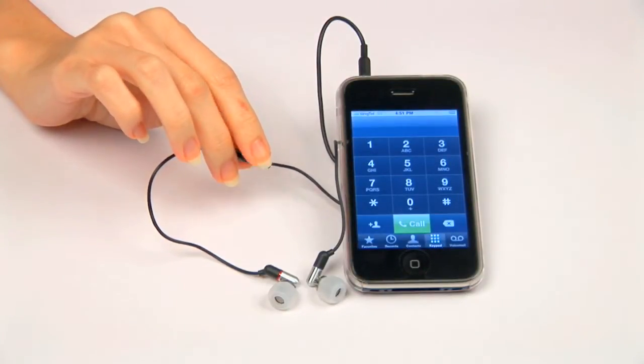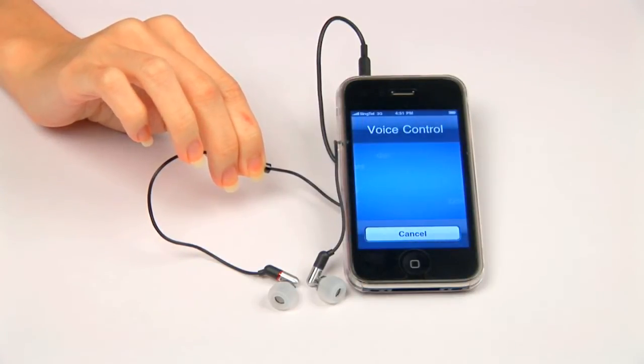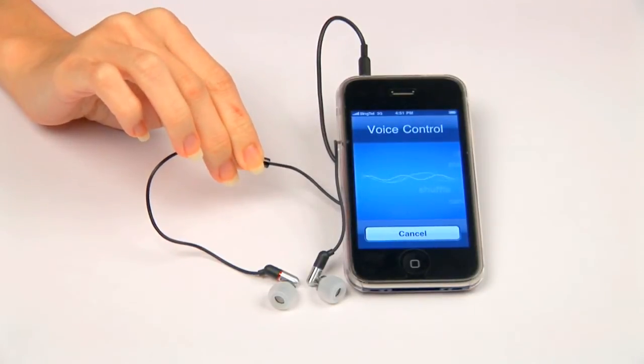Voice control option can also be accessed by pressing and holding the button. After the voice control option shows up on your iPhone, you may release the button. Call out the name of the person you would like to call in your contact list and it will dial out to the person.